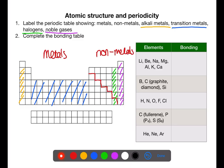For the bonding in the first 20 elements, lithium, beryllium, sodium, magnesium, aluminium, potassium, and calcium all show metallic bonding. Boron, carbon graphite, carbon diamond, and silicon are all covalent networks.